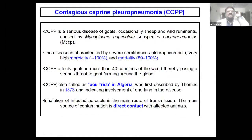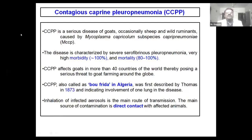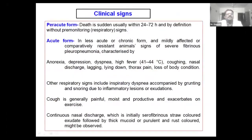Coming to contagious caprine pleuropneumonia (CCPP) — in Rajasthan, I have not seen this infection much and there are very few cases in the field. This infection is caused by Mycoplasma capricolum subspecies capripneumoniae. The morbidity is 100% and mortality can be 80 to 100%. It is prevalent in around 40 countries and also in India. The disease was first reported in Algeria and is also called BOFREDA. Disease spreads by direct contact and aerosol routes. There are three forms: per-acute, acute, and chronic.